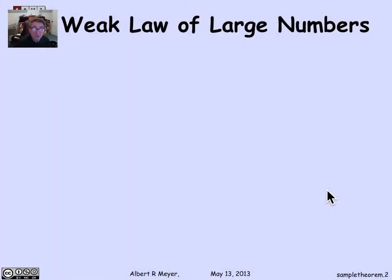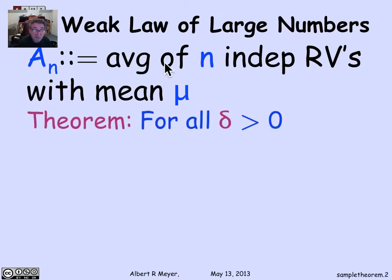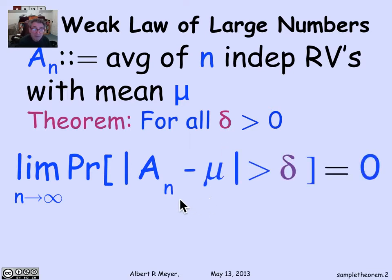So let's remember that the law of large numbers says that if you have n independent identically distributed random variables with mean mu, and we let A_n be their average, then for every positive number delta, the probability that the average differs from the mean by more than delta goes to zero as the number of trials increases.